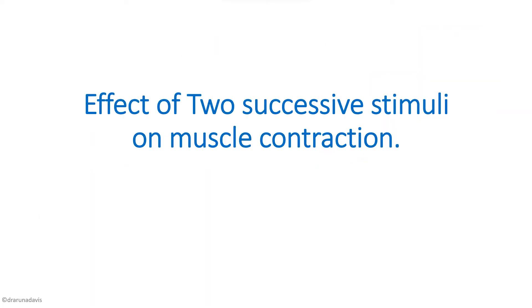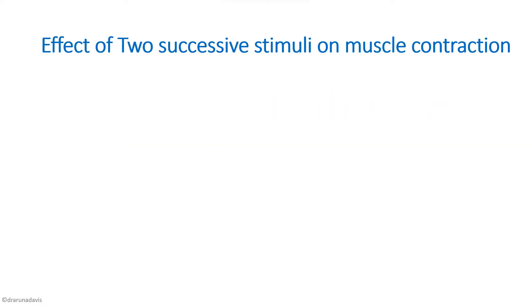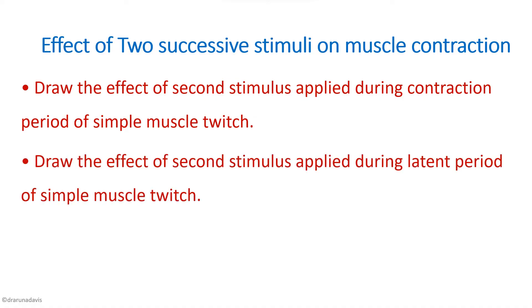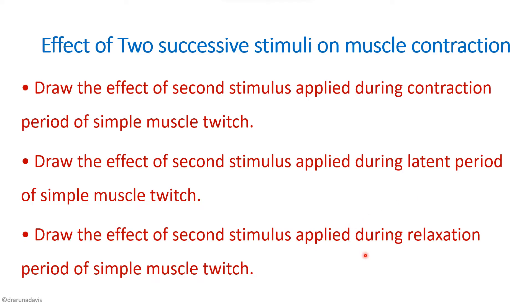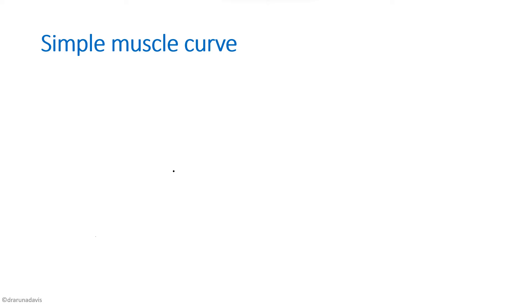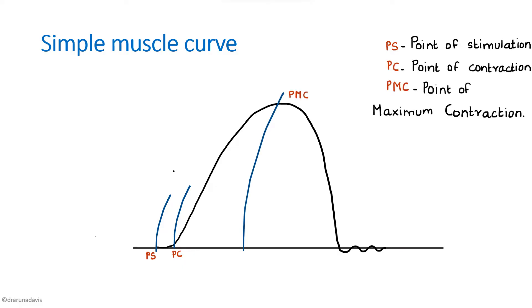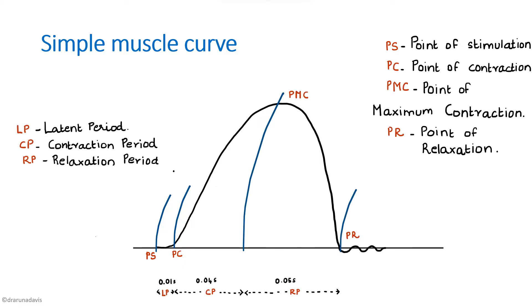The next experiment is the effect of two successive stimuli on muscle contraction. Questions may ask you to draw the effect of a second stimulus applied during the contraction period, latent period, or relaxation period of a simple muscle twitch. Whatever the question, you must first draw the simple muscle curve, then compare the result. Mark all points: point of stimulation, point of contraction, point of maximum contraction, point of relaxation, and the different periods.